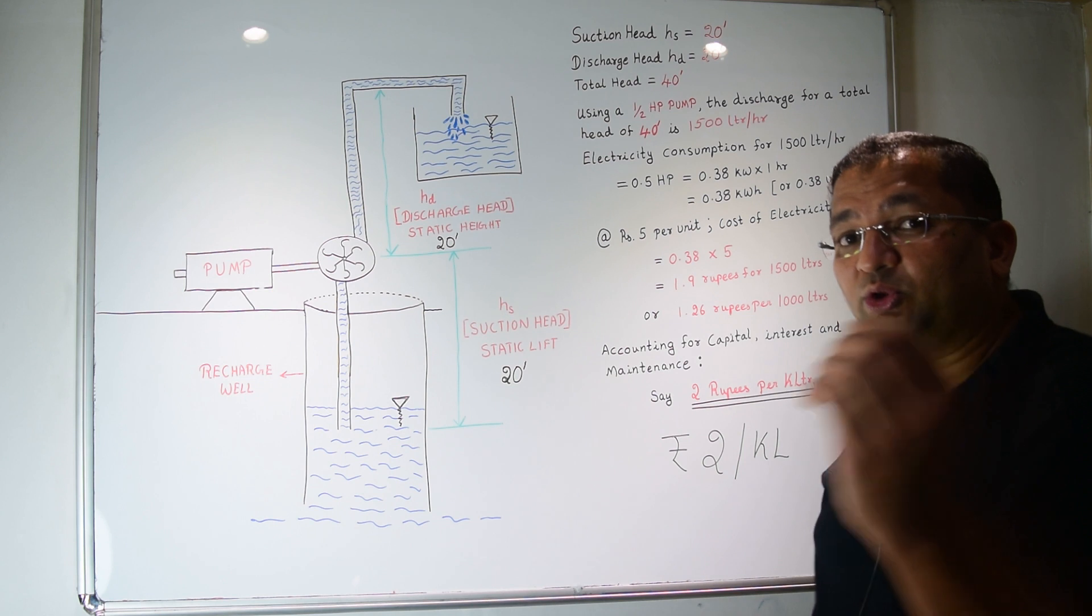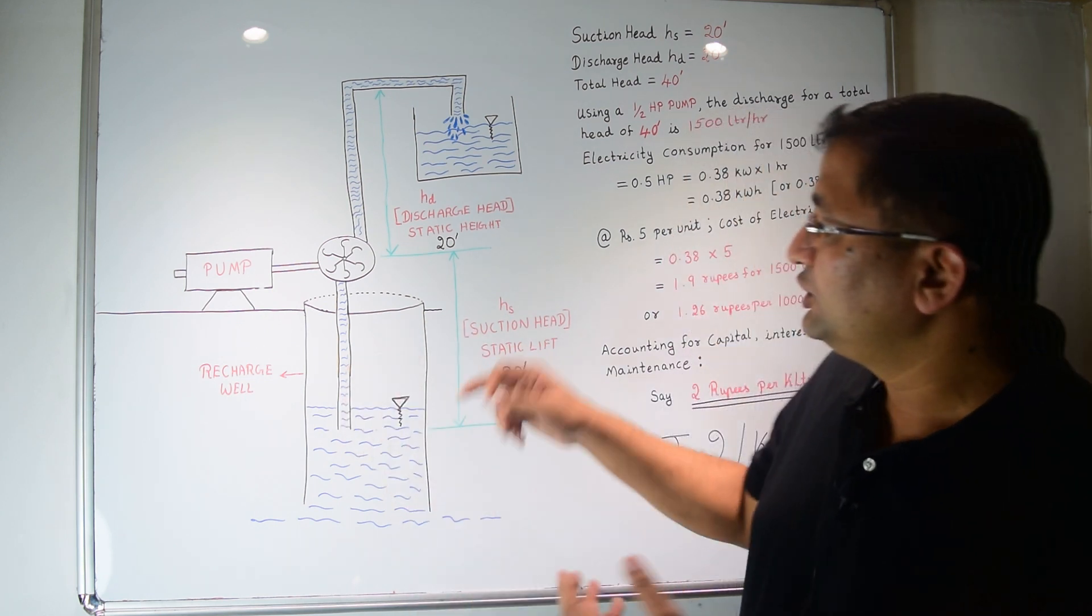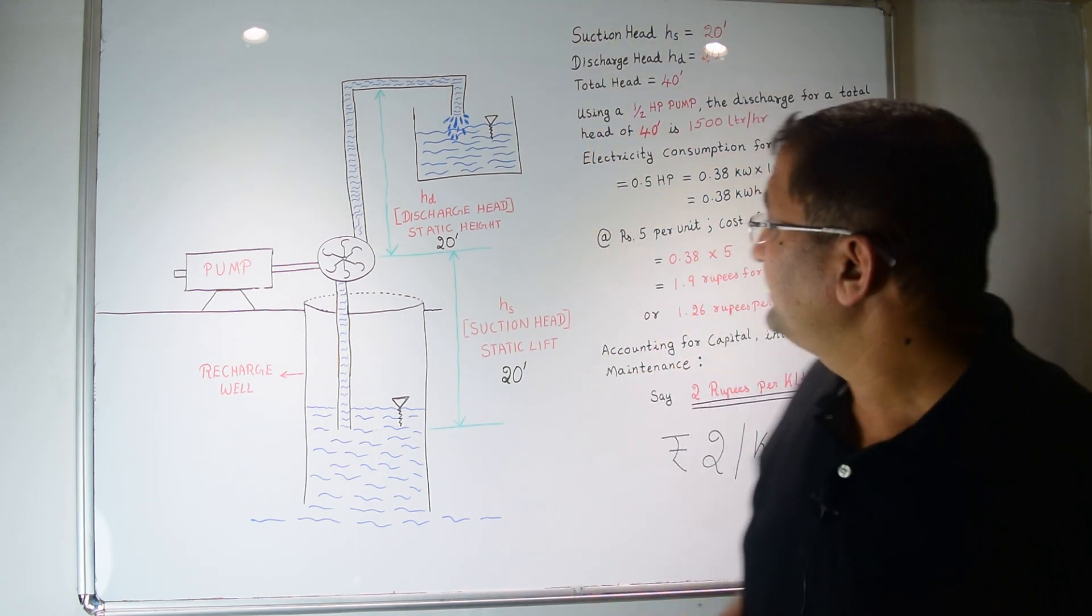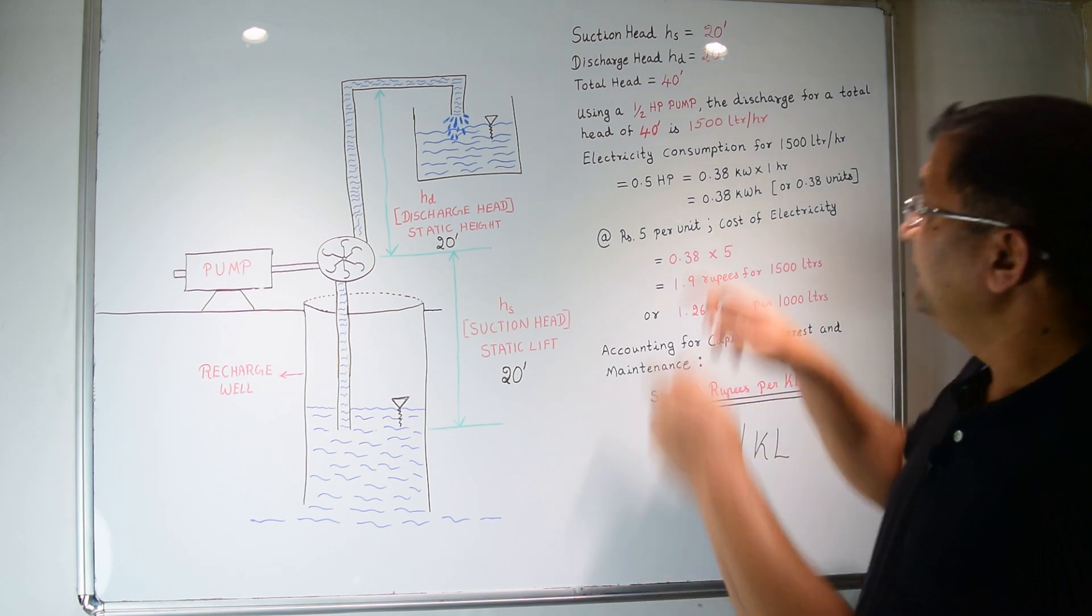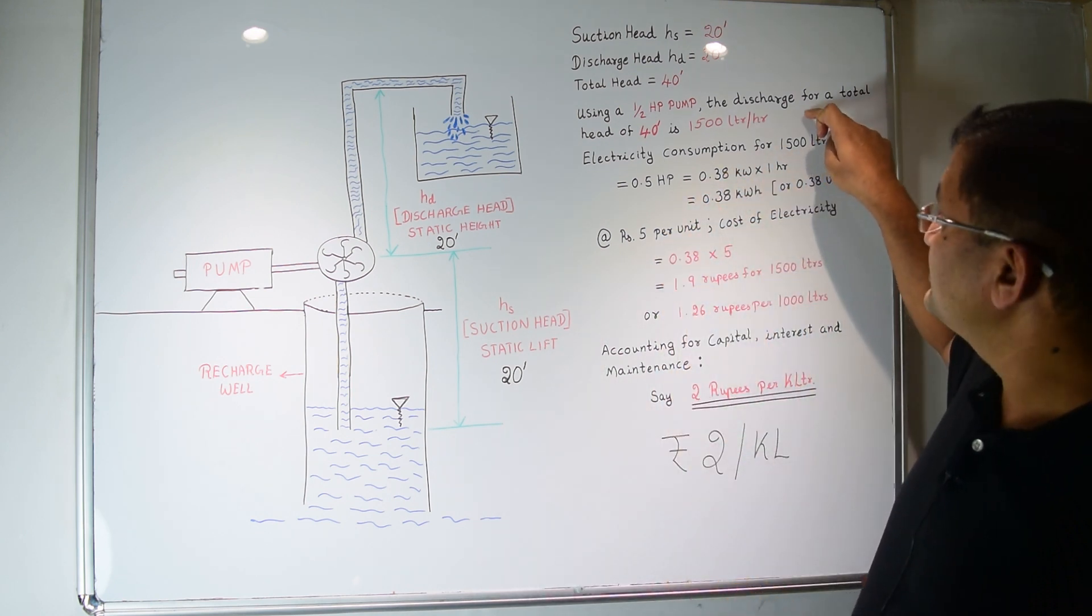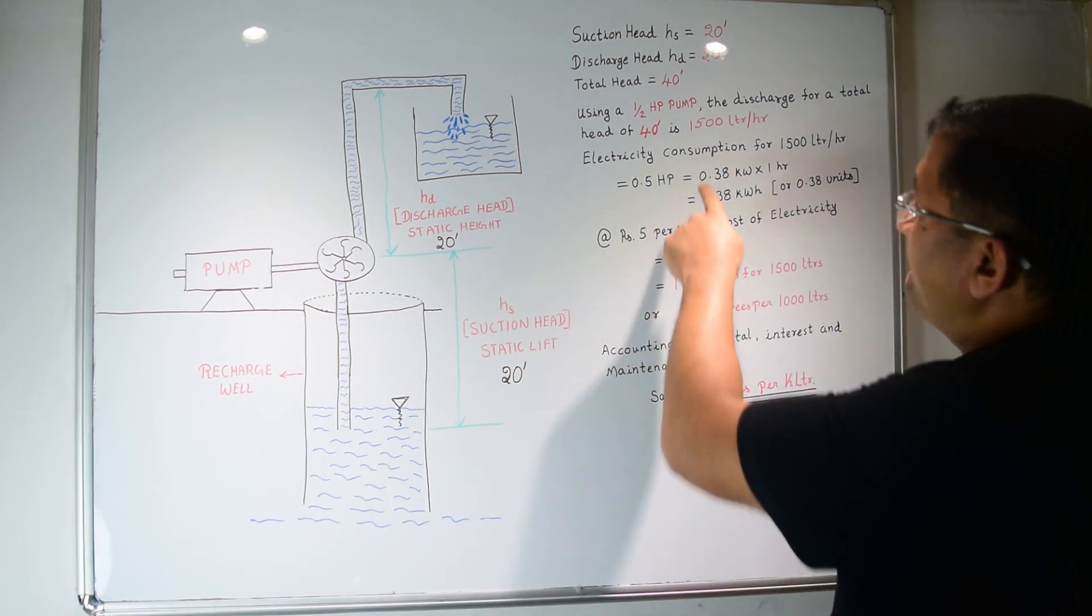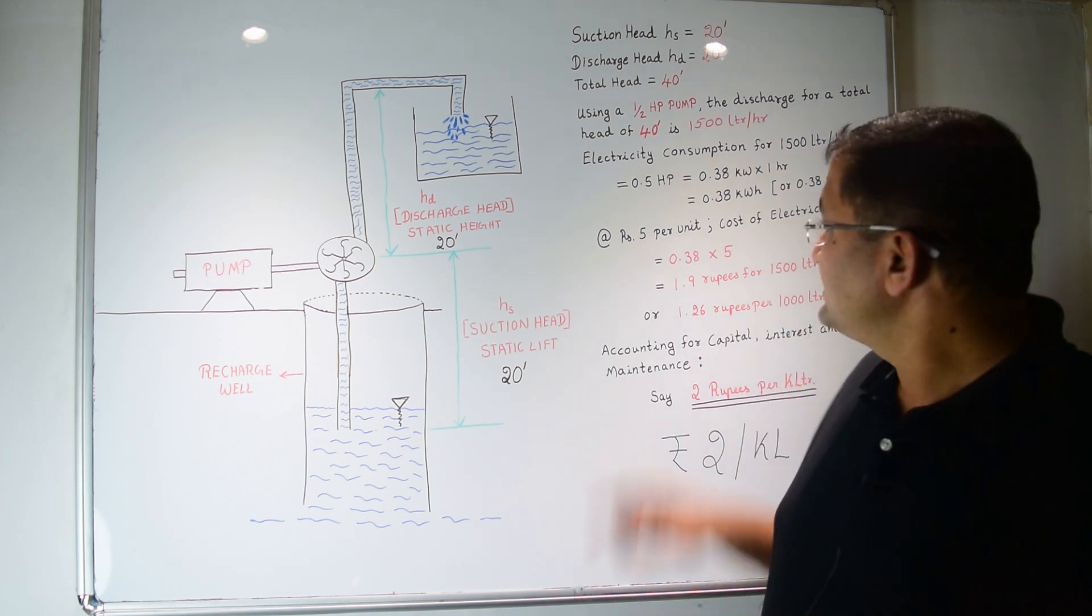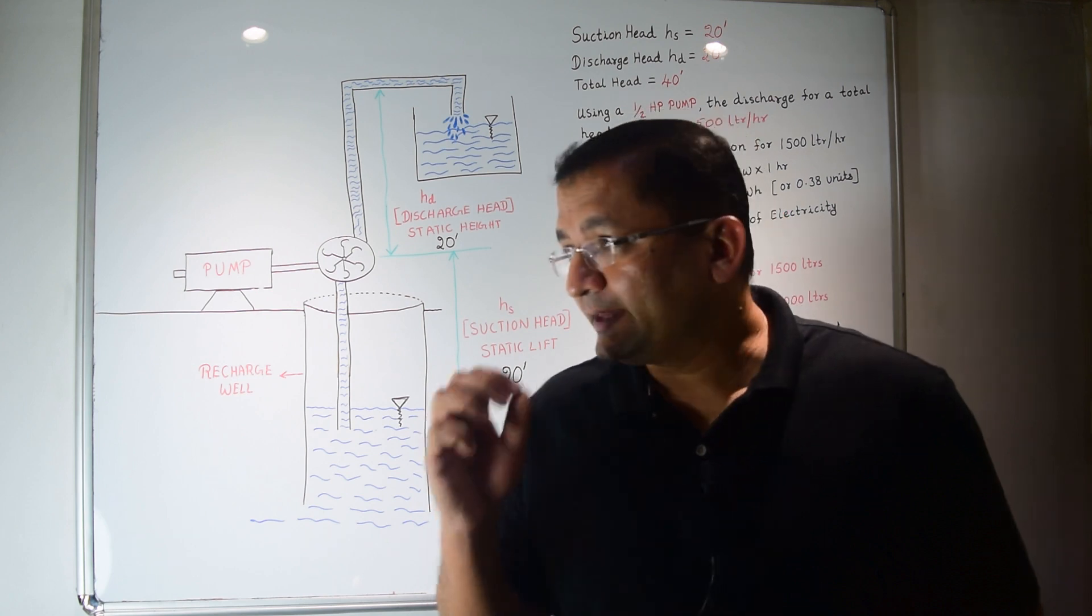This will deliver 1500 liters of water for a total head of 40 feet. So now looking at the economics of it, how much energy does it consume to deliver 1500 liters of water. So now 0.5 HP is 0.38 kW. If it runs for one hour, it will pump 1500 liters of water.